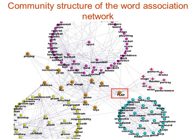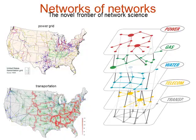Up to three or four years ago, people were considering only single networks in isolation — analyzing Facebook as a single entity, or the power grid in isolation. But in reality, these networks do not live in isolation. They are part of larger systems in which networks interact with other networks.